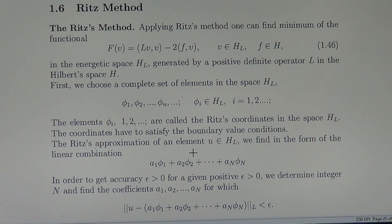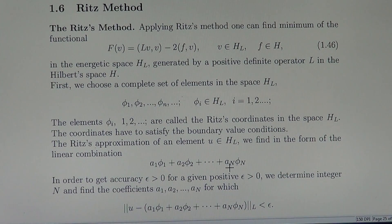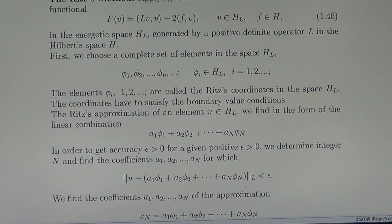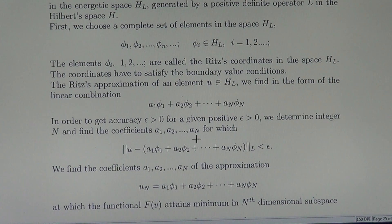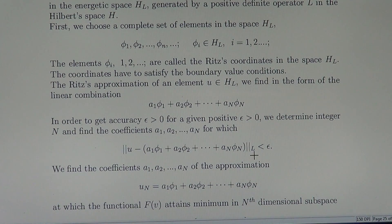The Ritz approximation of an element U we find in the form of the following linear combination: A1·Phi_1 plus A2·Phi_2 plus ... An·Phi_n. In order to achieve accuracy Epsilon greater than zero for a given positive Epsilon, we determine integer n and find the coefficients A1, A2, ..., An for which the difference between the element U and its approximation is less than or equal to Epsilon in the norm H_L.